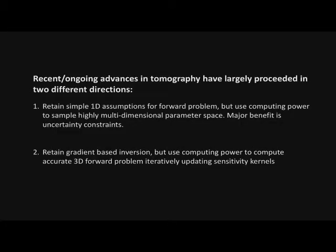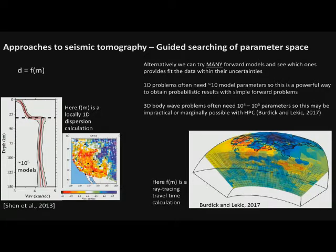We hear about different types of tomography a lot lately. Two different directions are being pretty aggressively pursued. One retains fairly simple forward models — 1D-based forward problems — but uses modern computing power to really sample the highly multidimensional parameter space. If we have a lot of parameters, maybe we don't just want the least-squares optimal solution; we want to know if there are a bunch of different things that could look right. The second approach retains a simpler inversion but uses modern computing power to go to a more accurate forward problem.